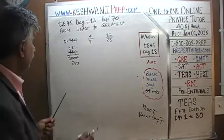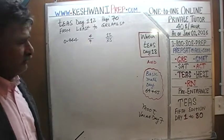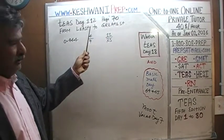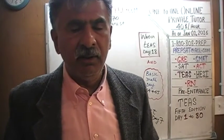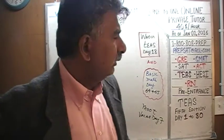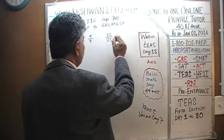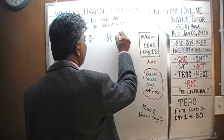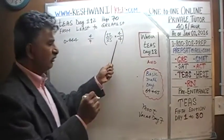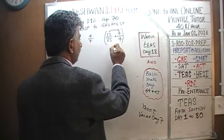Let's convert everything to decimal. The 0.044 is already in decimal. For 11/25, it's very easy to convert — we talked about this before. We can multiply top and bottom by 4 over 4, which doesn't change the value, since 4/4 is just 1. This gives us 25 times 4 equals 100 on the bottom, and 11 times 4 equals 44 on the top.